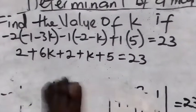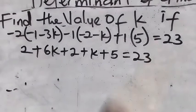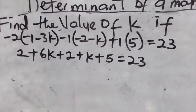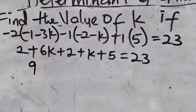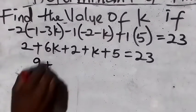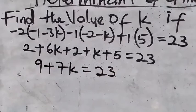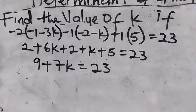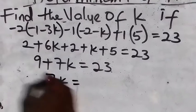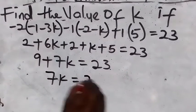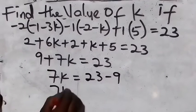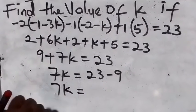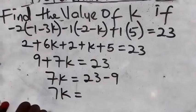Don't forget this all equals twenty-three. Collect the like terms: two plus two plus five gives nine. Then six k plus k gives seven k. So you have nine plus seven k equals twenty-three. Bring nine to the other side: twenty-three minus nine equals fourteen. So seven k equals fourteen.